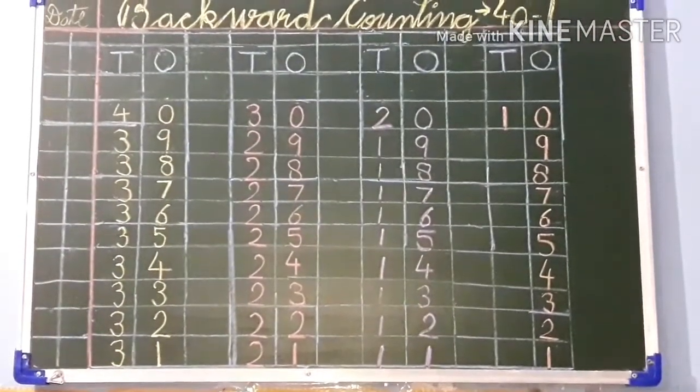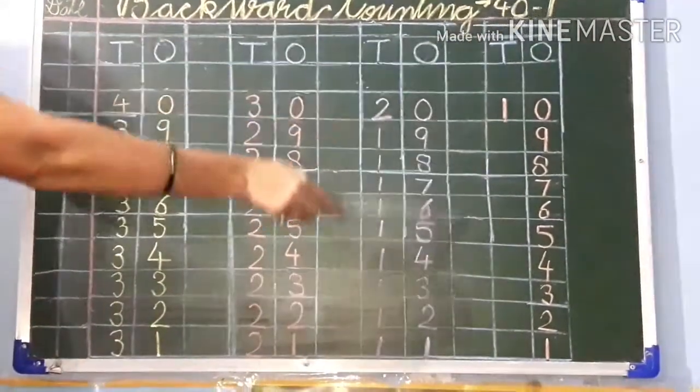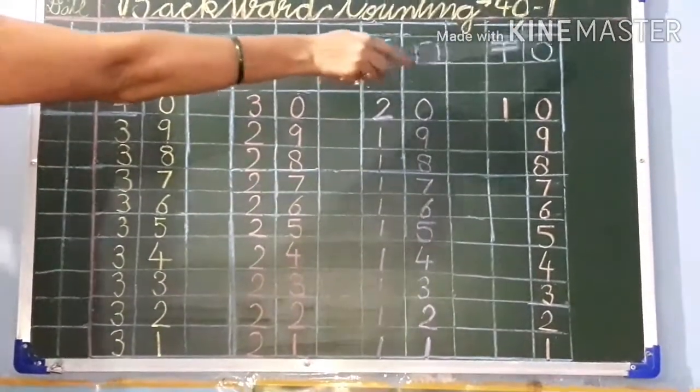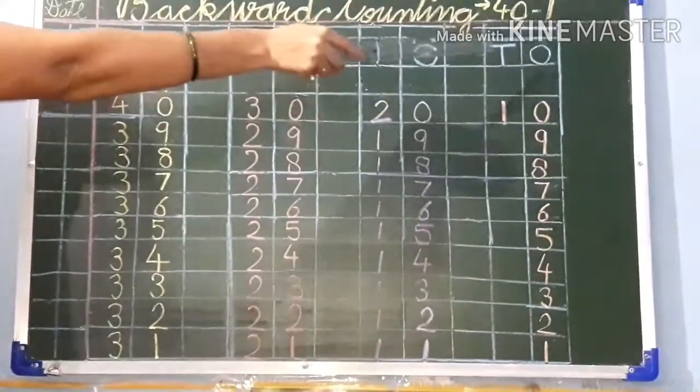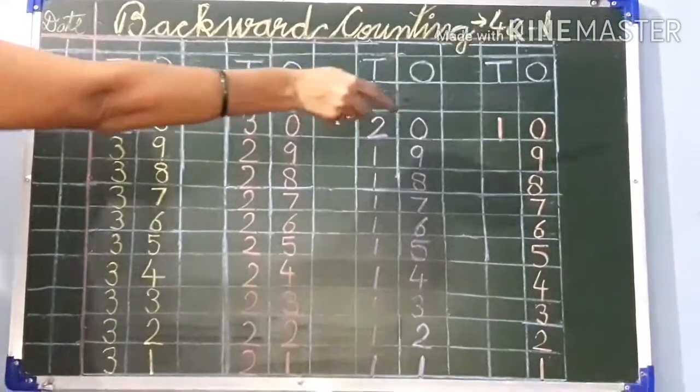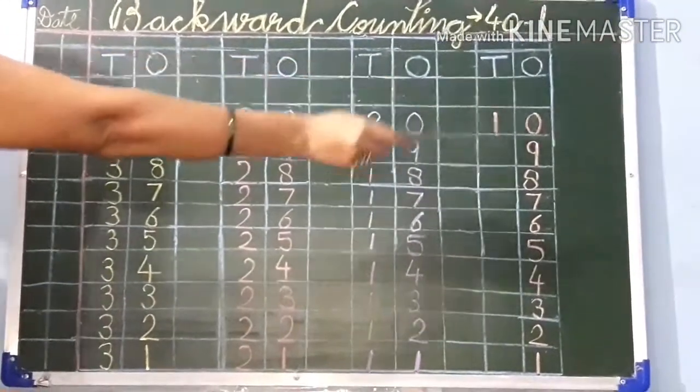Now again you have to leave this column here and write T O. After leaving 1 column you will write T O. And then leave 1-1 block here.